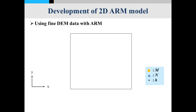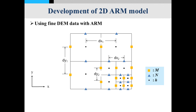This slide shows how to refine the mesh and the location of parameters on the refined mesh. This is one mesh, but if we need higher resolution we can simply divide this mesh into four. If we need even more accurate resolution we can divide the mesh further until we reach an appropriate resolution. This method can save calculation time and it is easy to depict complex topography.